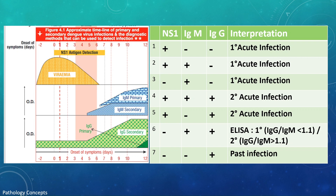If only IgM and IgG are positive and NS1 is negative, we must consider the IgG/IgM ratio for accurate diagnosis. If this ratio is less than 1.1, it is a primary acute infection; if the IgG/IgM ratio is more than 1.1, it is a secondary acute infection. If only IgG is positive, it suggests past infection with dengue virus.